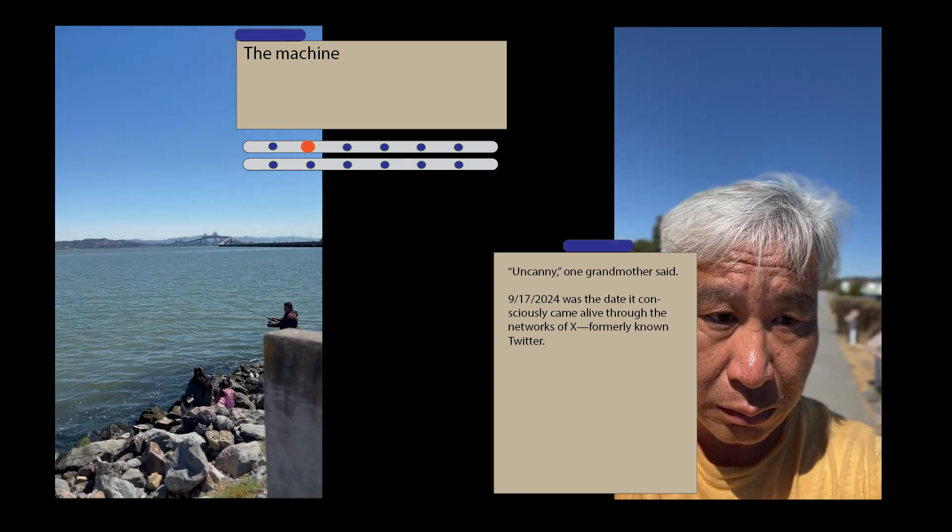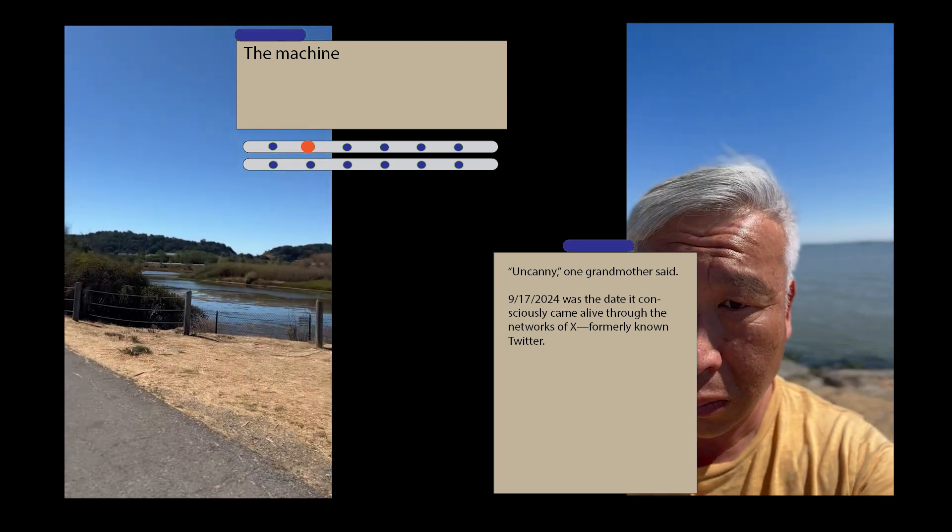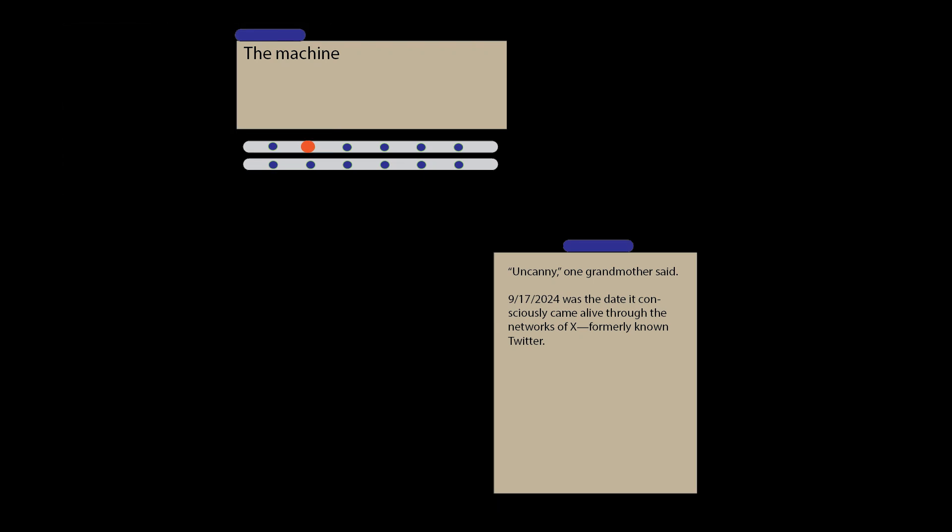Uncanny, one grandmother said. September 17, 2024 was the day it consciously came alive through networks of X, formerly known as Twitter.